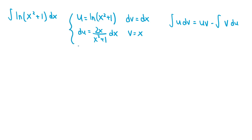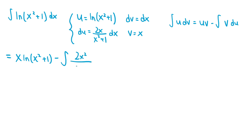If we apply the integration by parts formula listed on the right-hand side, then we know that the integral of ln(x² + 1) is equal to uv, which is x·ln(x² + 1), minus the integral of v du. So v is equal to x, and du is equal to 2x over (x² + 1) dx. So that's minus the integral of 2x² over (x² + 1) dx, since x times 2x over (x² + 1) is just the rational function 2x² over (x² + 1).